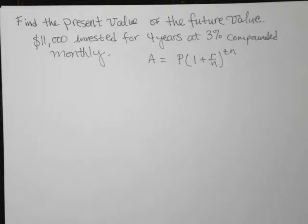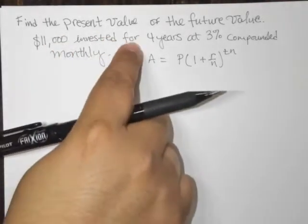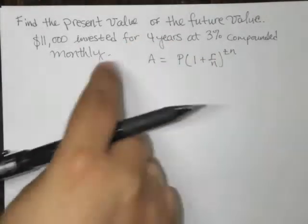In the following example, we are asked to find the present value of the future value. So they're giving us a future value of $11,000 invested for four years at 3%, compounded monthly.